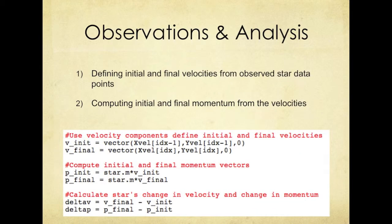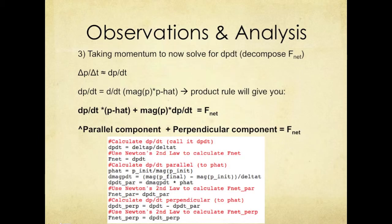Now we can use our observational data to find the net force. With data points, we are able to define the initial and final velocities along with initial and final momentums. After that, we take the momentum to solve for dp/dt, delta p over delta t, or in other words, the change of momentum over the change of time.